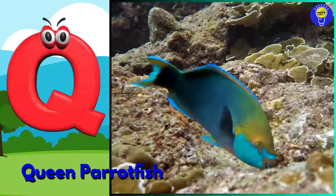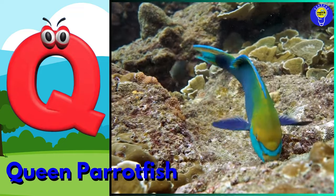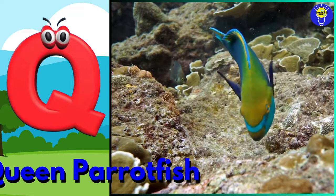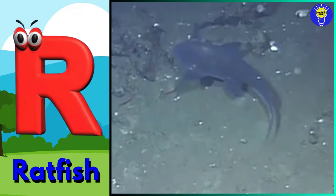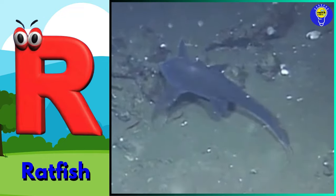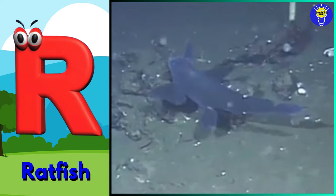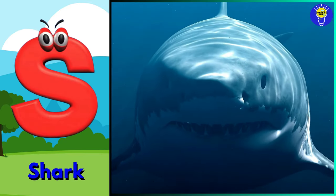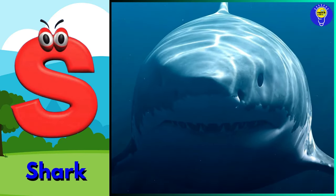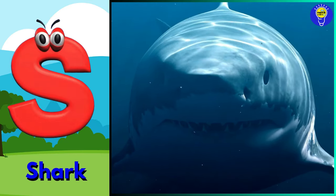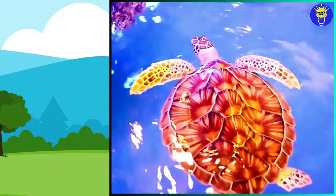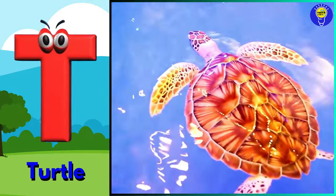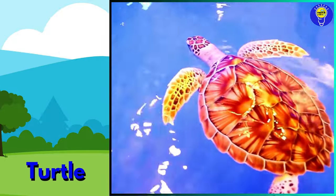Q is for queen parrotfish. R is for ratfish. S is for shark. T is for turtle.